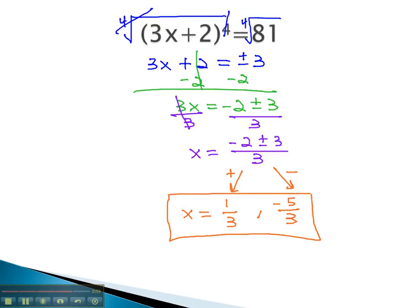It is very important to remember that when we get rid of an even exponent in the problem, we have two solutions, a plus and a minus, showing up on the line immediately after we take the index. Then, once the variable is isolated, we can separately consider the positive and negative solutions.